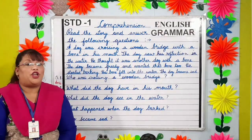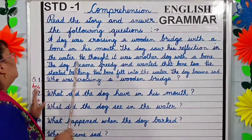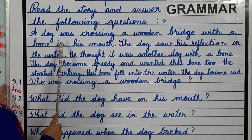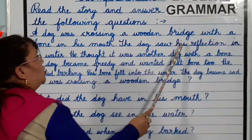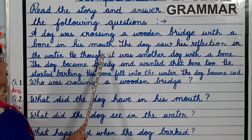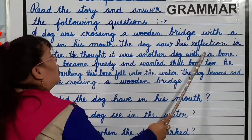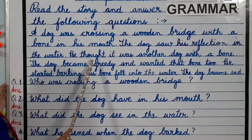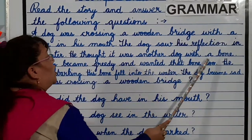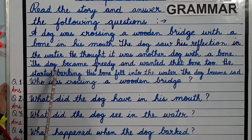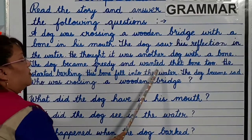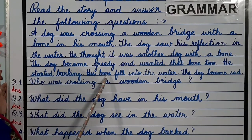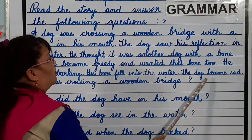Now students let us do one comprehension together. Read the story and answer the following questions. A dog was crossing a wooden bridge with a bone in his mouth. The dog saw his reflection — reflection means shadow — in the water. He thought it was another dog with a bone. The dog became greedy and wanted that bone too. He started barking. His bone fell into the water. The dog became sad.